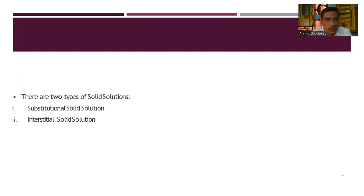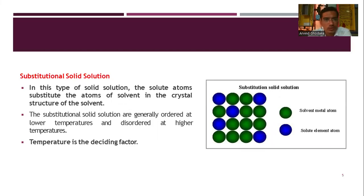There are two types of solid solutions: substitutional solid solution and interstitial solid solution. In a substitutional solid solution, the solute atoms substitute the atoms of the solvent in the crystal structure of the solvent. These are generally ordered at lower temperatures and disordered at higher temperatures, so temperature is the deciding factor. In the diagram, the green atoms are solvent metal atoms and the blue atoms are solute element atoms.